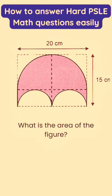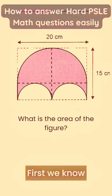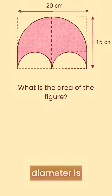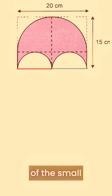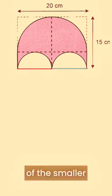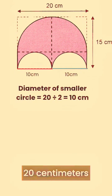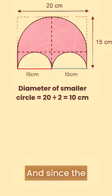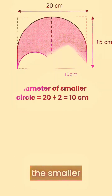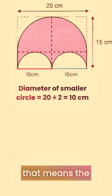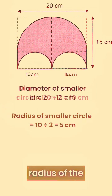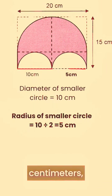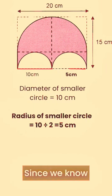What is the area of the figure? First, we know that the big semicircle is basically half of the circle. That means the diameter of the smaller semicircle is basically 20 cm divided by 2, which is 10 cm. And since the diameter of the smaller circle is 10 cm, that means the radius of the smaller circle is 5 cm, which is basically 10 divided by 2.